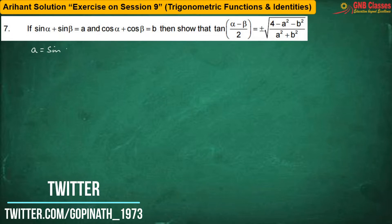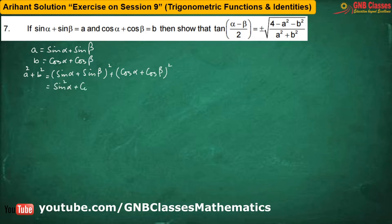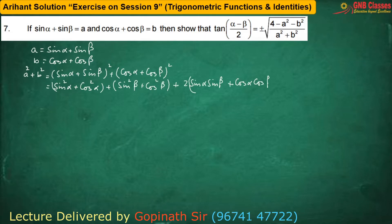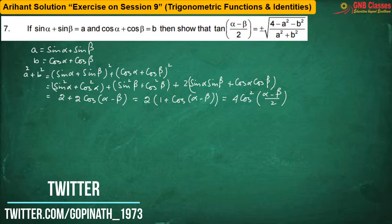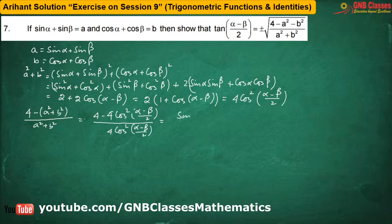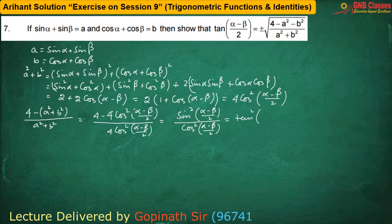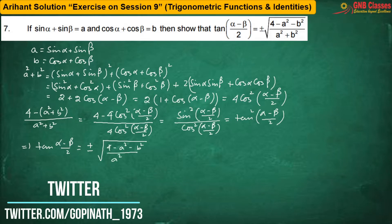Here we have a = ... and b = ... Squaring and adding the corresponding sides we are getting. Opening the bracket, 1 + cosθ can be written as 2cos²(θ/2). The value of (4 − a² + b²)/(a² + b²), after cancelling 4 from numerator and denominator, equals tan²((α−β)/2).